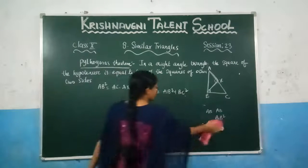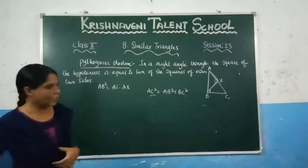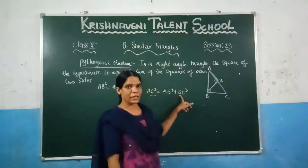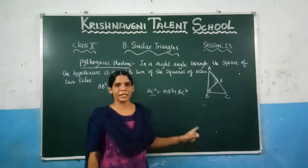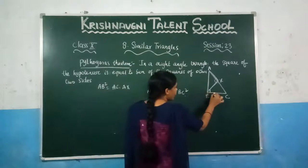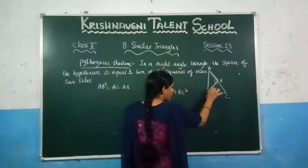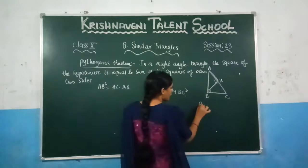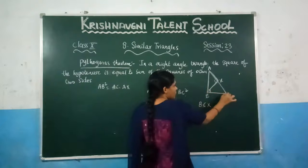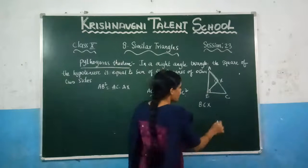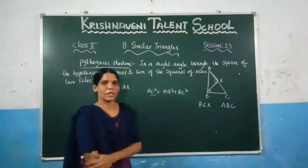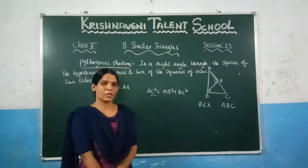Now, on the right hand side, BC squared is also there. That means we need to choose two triangles such that BC appears in both. You can consider triangle BCX, where BC is present. And similarly, if you consider the bigger triangle ABC, BC is also there. We need to prove these two triangles are similar so that we can take their corresponding sides as proportional.